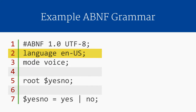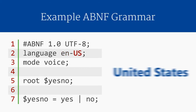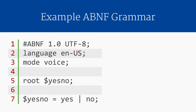Up next is a language declaration. The word language is a reserved word in ABNF, and it takes as a language identifier a lowercase two-letter language code, followed by a hyphen, and then an uppercase two-letter country code. Here we have the lowercase "en" for English, and then the uppercase "US" for the United States. This indicates to the ASR that the grammar is designed for the U.S. English dialect. Because the language code determines which acoustic model will be used for the recognition, it is important to always specify the correct language and country.